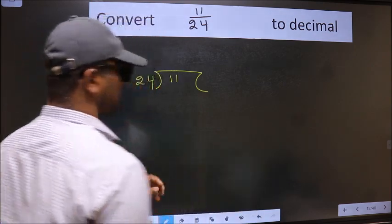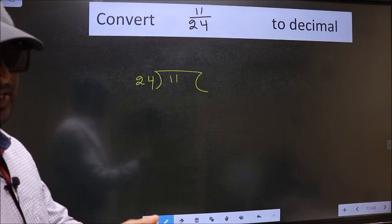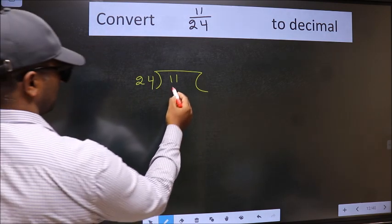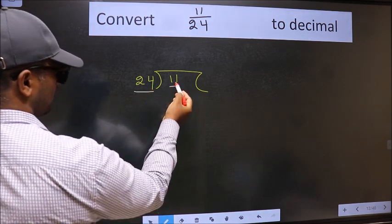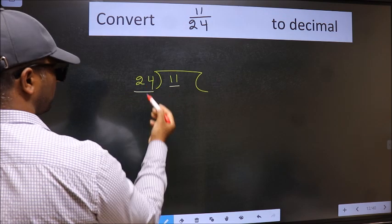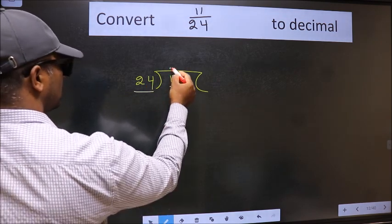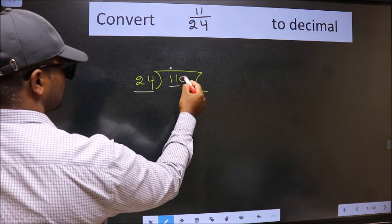This is your step 1. Next, here we have 11 and here 24. 11 is smaller than 24, so what we should do is put dot and take 0.